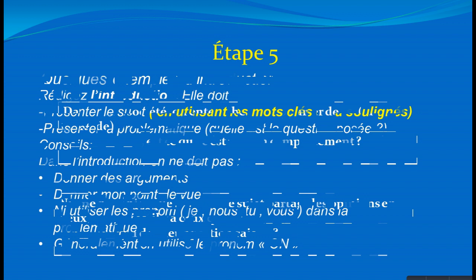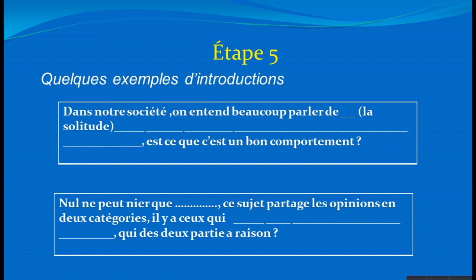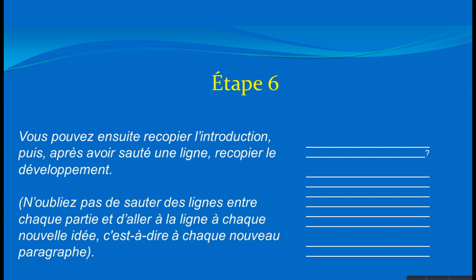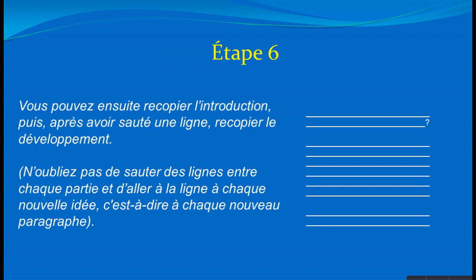Toujours en cinquième étape, vous pouvez faire pause et écrire en utilisant les mots clés déjà soulignés dans votre sujet. Sixième étape : vous recopiez à partir du brouillon. Vous avez le tableau, l'introduction et la conclusion déjà écrits. On saute une ligne après l'introduction et une autre ligne après le développement, pour avoir seulement trois parties bien distinctes.